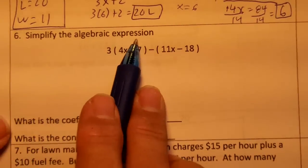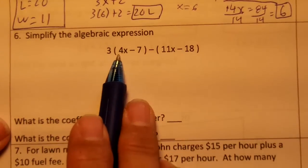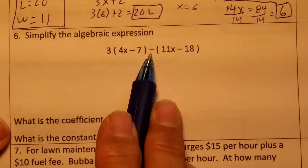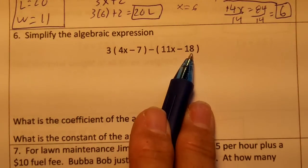Number 6. Simplify the algebraic expression: 3 times the quantity of 4x minus 7 minus the quantity of 11x minus 18.